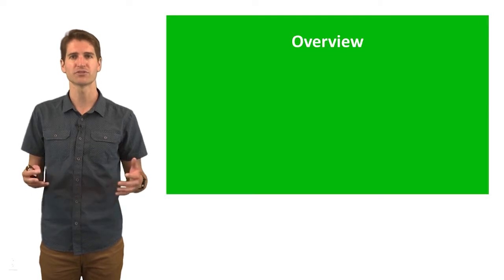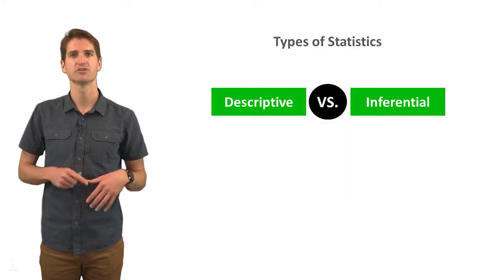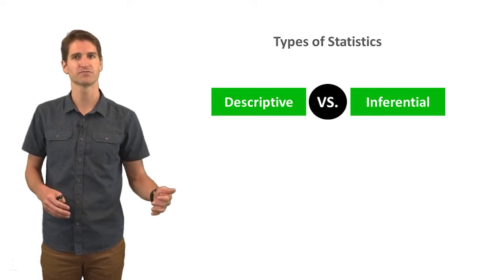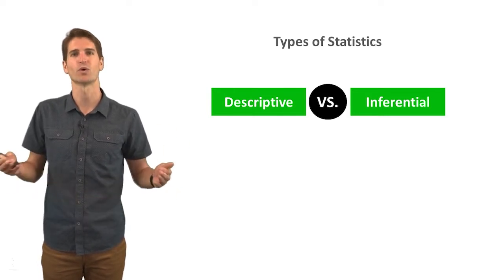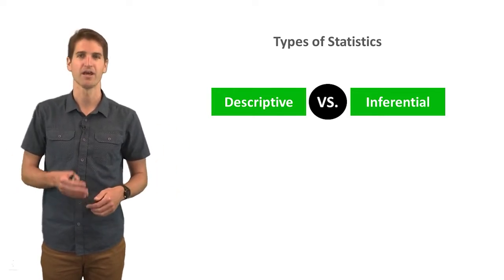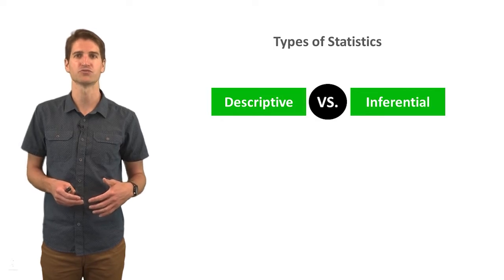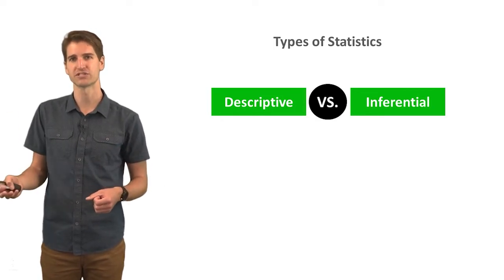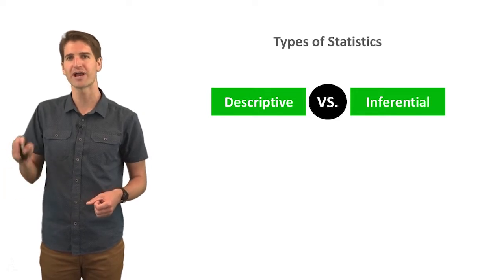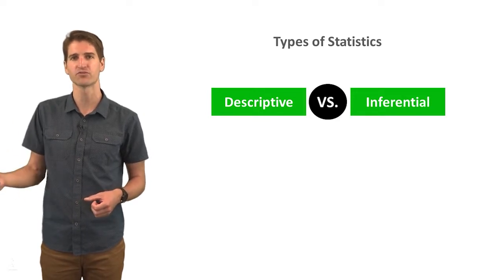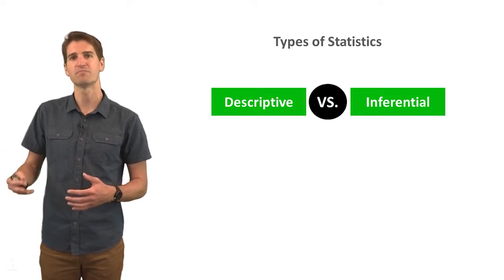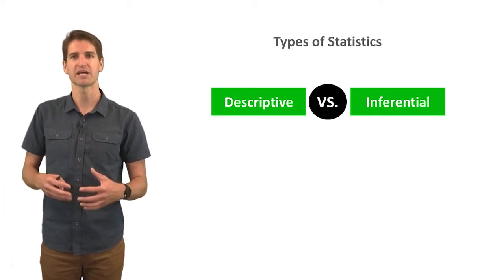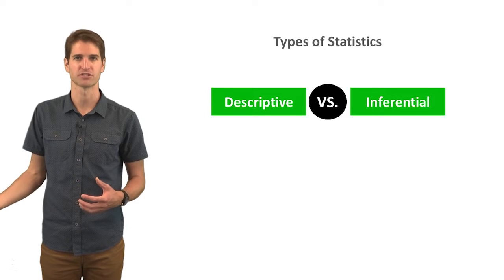So let's start with an overview of descriptive statistics. Generally speaking, we have two types of statistics we can focus on: descriptive and inferential statistics. Descriptive statistics refer to statistics that are used to describe the sample. Inferential statistics also describe something, but you're actually trying to make inferences or generalizations about the underlying population based on data that you have from a sample that comes from that population.